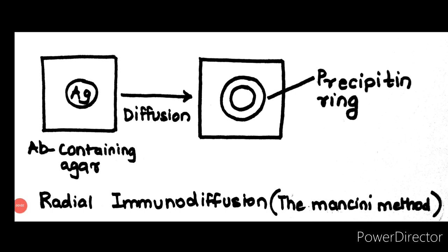Radial immunodiffusion, also called the Mancini method. In radial immunodiffusion, an antigen sample is placed in a well and allowed to diffuse into agar containing a suitable dilution of an antiserum. As the antigen diffuses into the agar, the region of equivalence is established and a ring of precipitation, a precipitating ring, forms around the well.